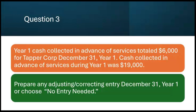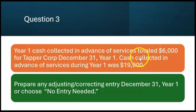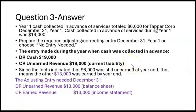Question three. Year one cash collected in advance of services totaled $6,000 still unearned for Tapper Corp on December 31st, year one. Cash collected in advance of services during year one was $19,000. Here, they collected cash in advance during the year — $19,000 — and at the end of the year, $6,000 of that is still unearned. When cash is collected in advance all year, the entry made during the year was debit cash, credit unearned revenue. Unearned revenue is a current liability — cash now, income statement later. This is a deferral of revenue.